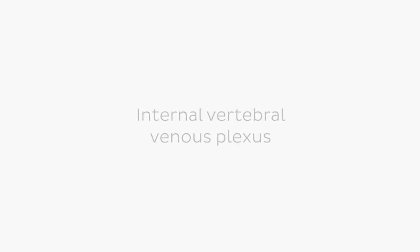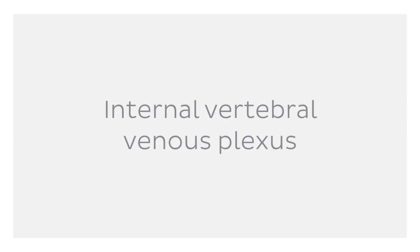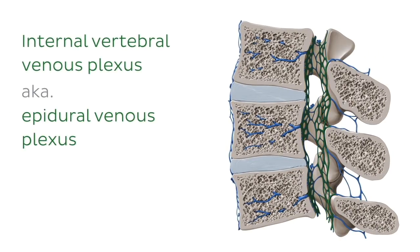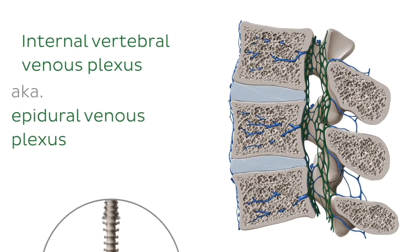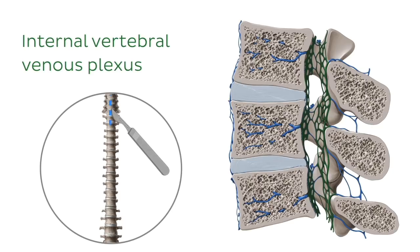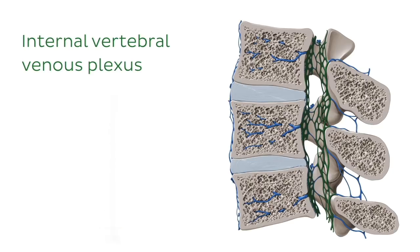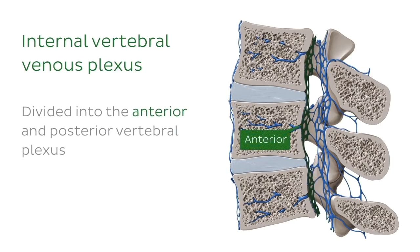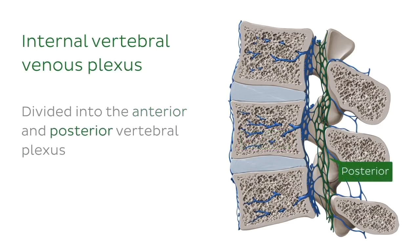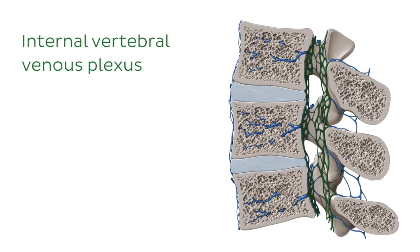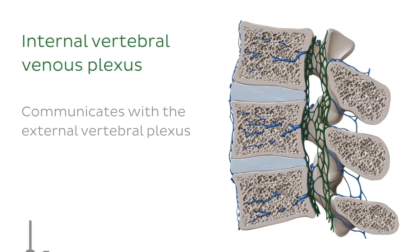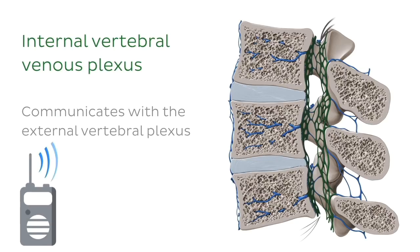Let's first have a look at the internal vertebral venous plexus, which is also known as the epidural venous plexus. This illustration shows the lateral view of the vertebral column which has been cut along the sagittal axis. The internal vertebral venous plexus is divided into the anterior and posterior vertebral plexus, found within the vertebral canal. The anterior and posterior vertebral plexuses communicate with the external vertebral plexus, which we'll talk about later in the video.